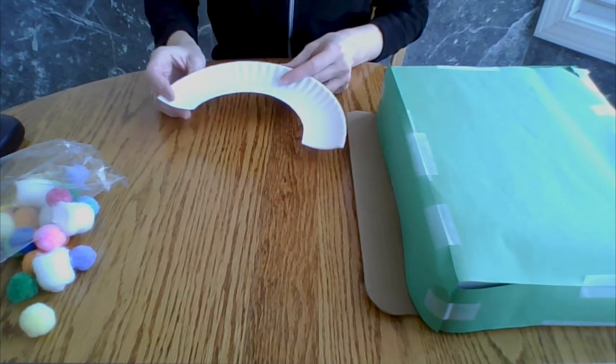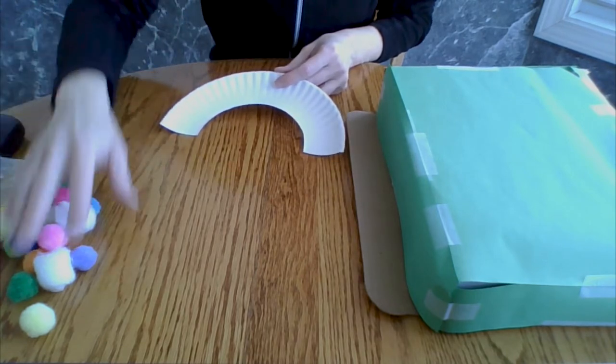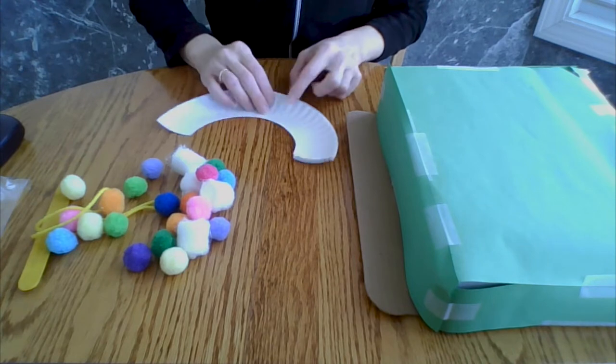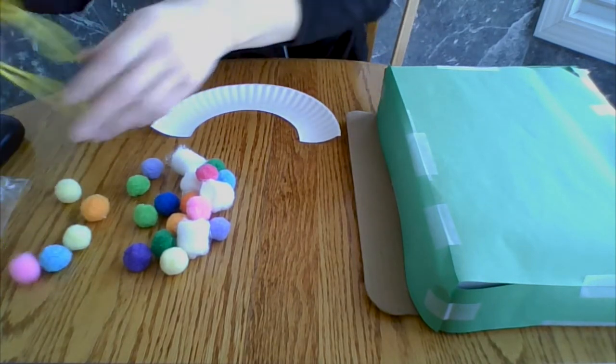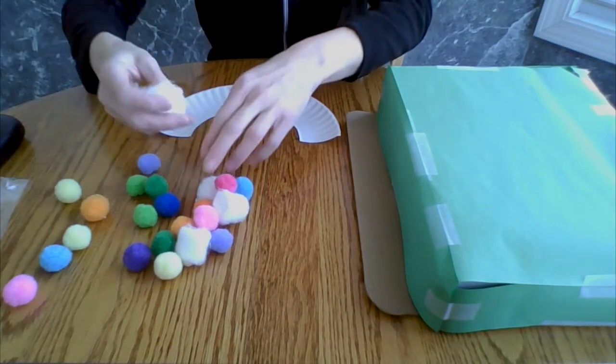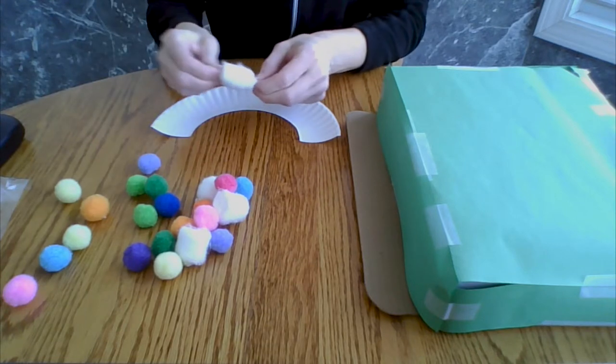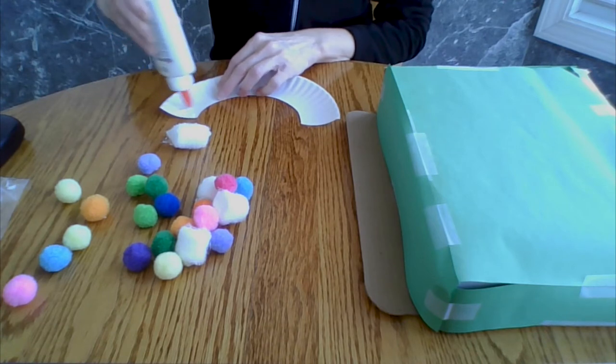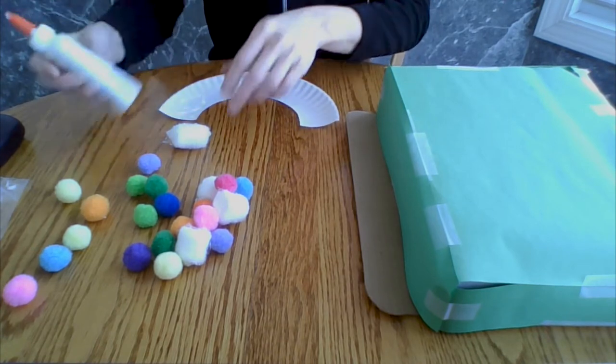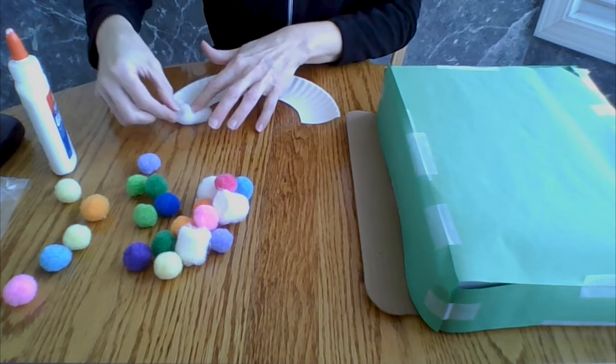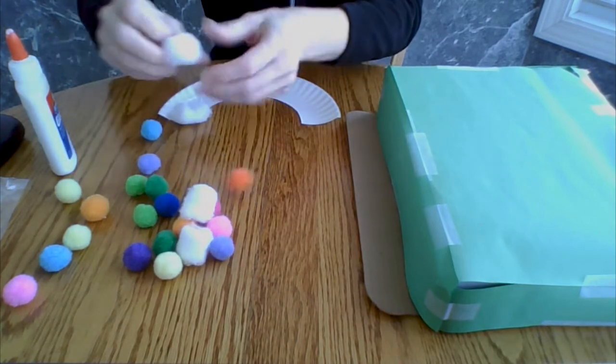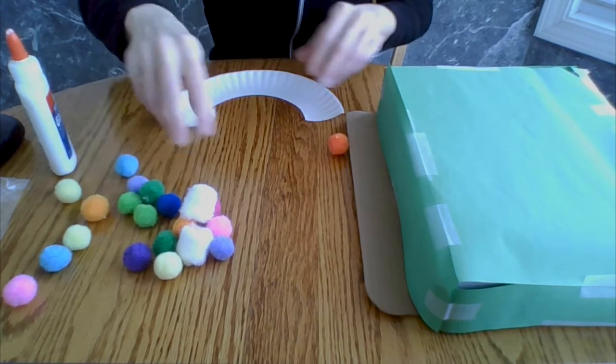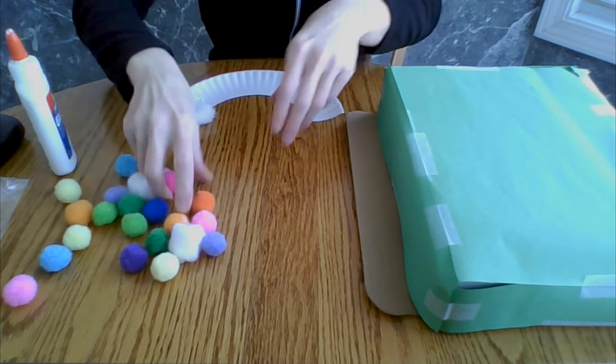So what you're going to do is put a rainbow of pom-poms on this. You can either use tape or glue. The white cotton balls are for clouds at the end. So stretch a couple of those out so they look a little fluffier if you want. Put some of those on one end and then start making your rainbow.